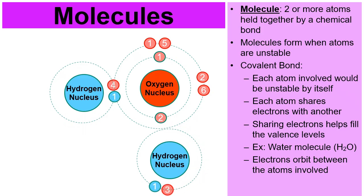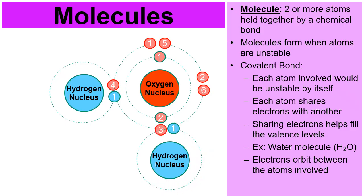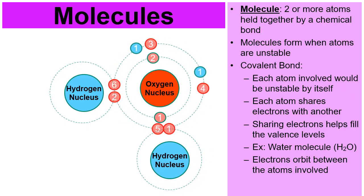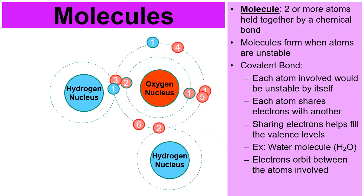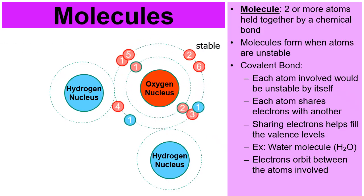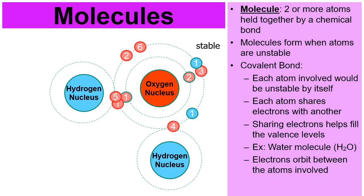Look at the hydrogen on the bottom — same thing. One of its own electrons in blue, and it's sharing one, borrowing one, from the oxygen in red. It's stable. Now look at the red oxygen. The red oxygen has its own electrons in red, but it's also borrowing the two in blue. Like the others, they all become stable because they share their electrons back and forth between each other.